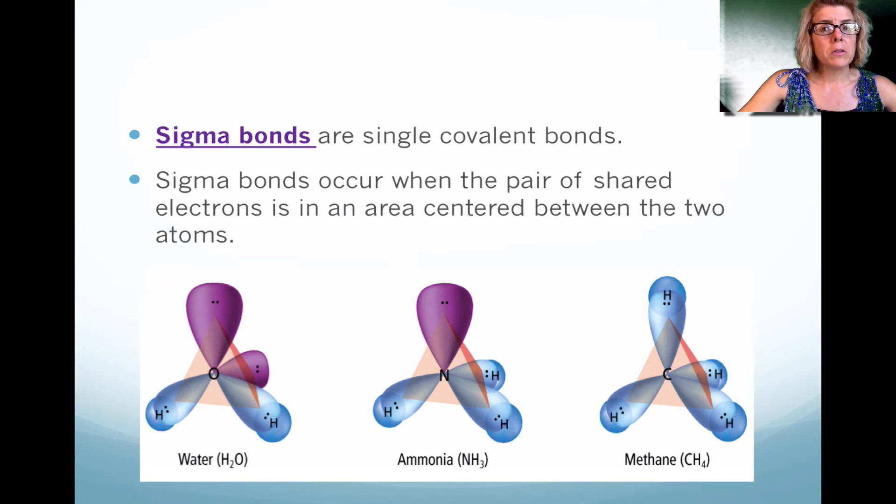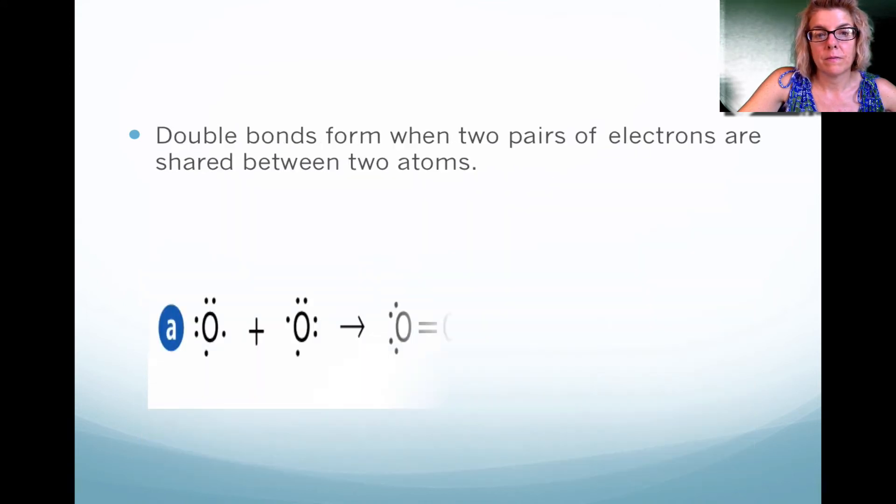You may hear the term sigma bond. A sigma bond is essentially one covalent bond. When you look at the examples here, we have water, ammonia, and methane. They all together have a single covalent bond with hydrogen. With water, there's two; with ammonia, there's three; and with methane, there's four sigma bonds. Notice the purple, that is not a sigma bond. That is a non-bonding pair of electrons.